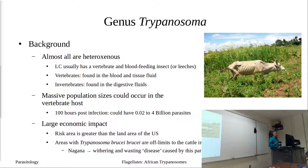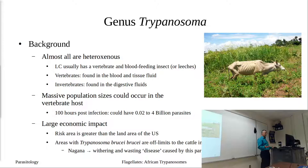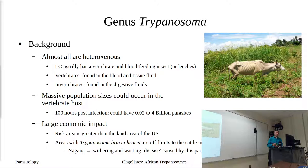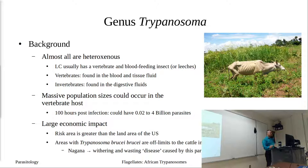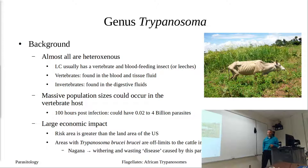Once inside the vertebrate host, trypanosomes can have massive population sizes because they replicate inside the definitive host. For some African trypanosomes, 100 hours after infection you can have as many as 4 billion parasites circulating in your blood and tissue fluid — starting from maybe 10 to 20. This exponential replication produces populations with pretty significant effects on our host. This group causes significant economic impacts — not only to human health and lost productivity but also farmland.